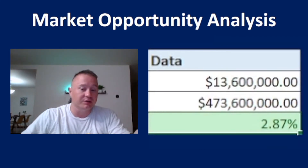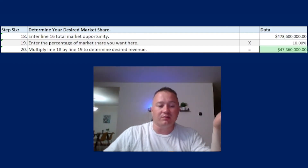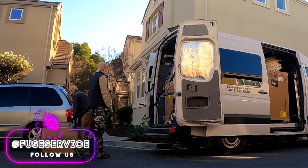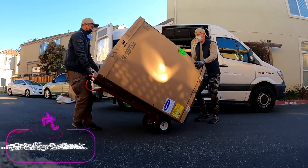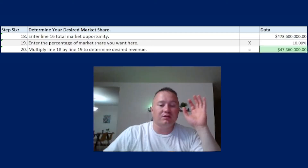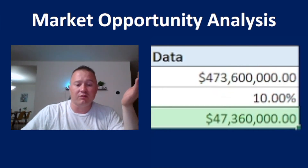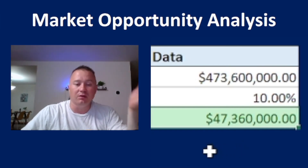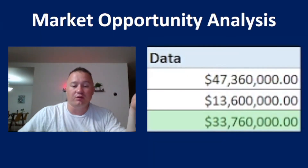Step number six: determine your desired market share. We're just a five-year-old HVAC company — we just recently got our electrical, plumbing, and refrigeration licenses. I'm not trying to be very big; I'm targeting just 10%, for example. That means I can make $47 million dollars from the Santa Clara County market. To reach that 10% point, I have to make $33 million more in revenue.